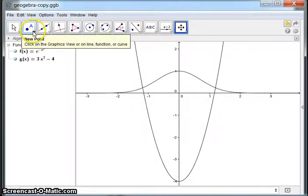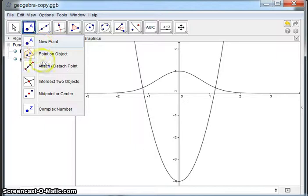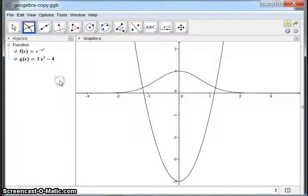And now to find the point of intersection of those two graphs, again we go over to this point drop-down and use this little arrow down here to drop down and look for intersect two objects. And then we come over and select the two objects. The function g now is highlighted, so I'll select that. The function f is highlighted and I will select that.